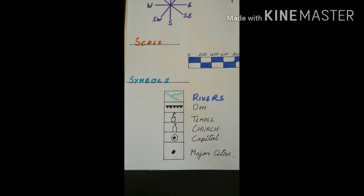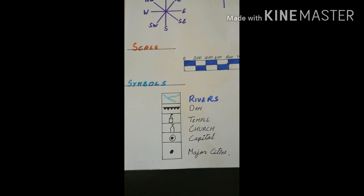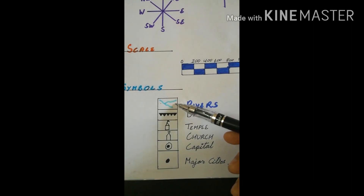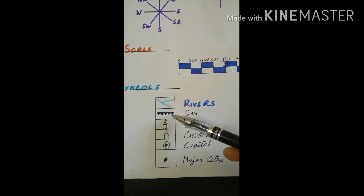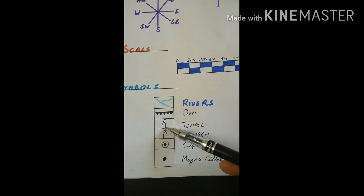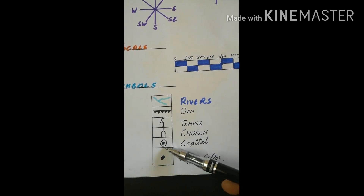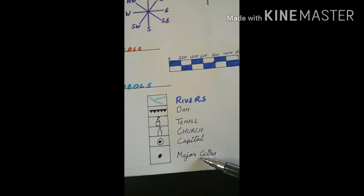Let's move to our next topic: symbols. I have drawn some symbols here. This symbol is for a river, this is for a dam, this is for a temple, this is for a church, this is for the capital of a state, and this is for a major city.